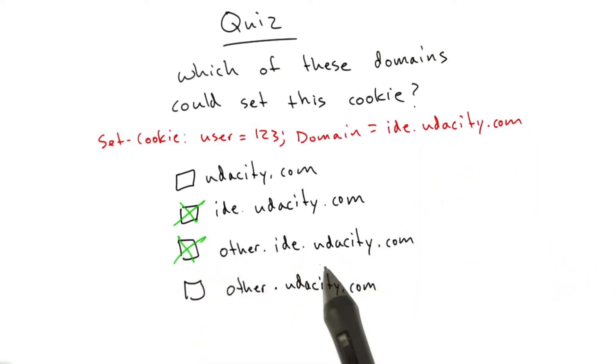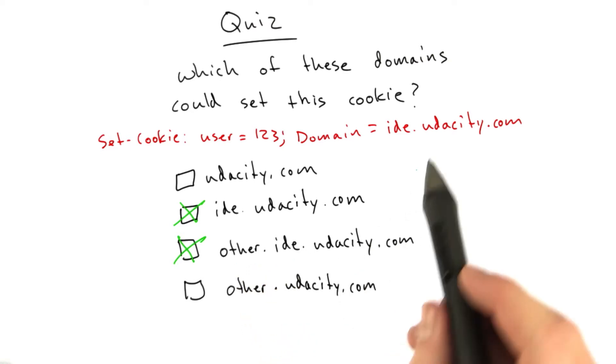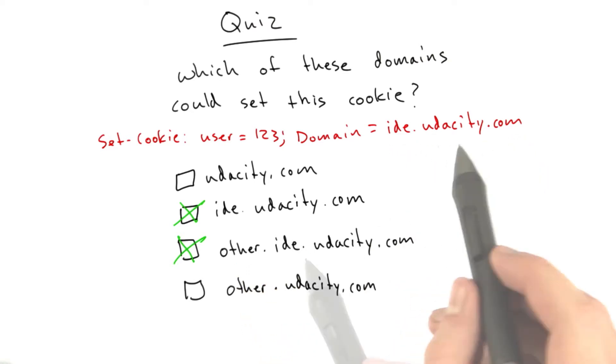The second answer, other.ide.udacity.com. This basically means if other can set a cookie for its parent, which works fine.